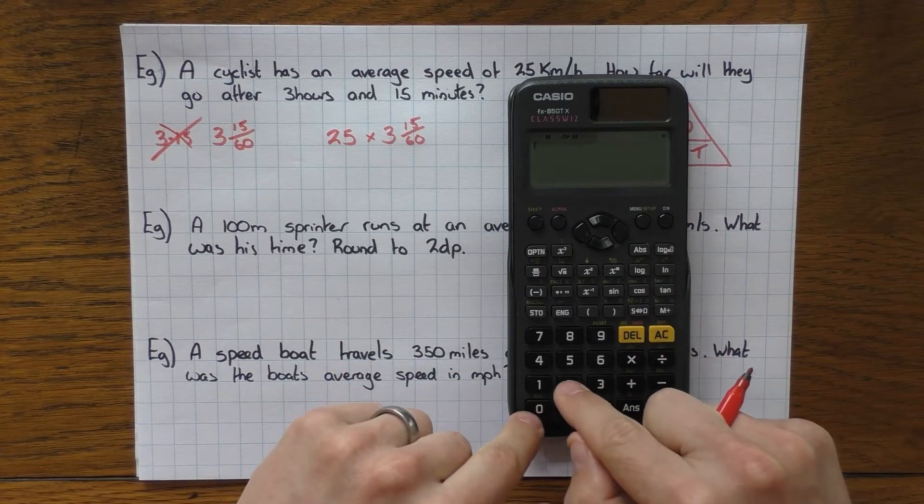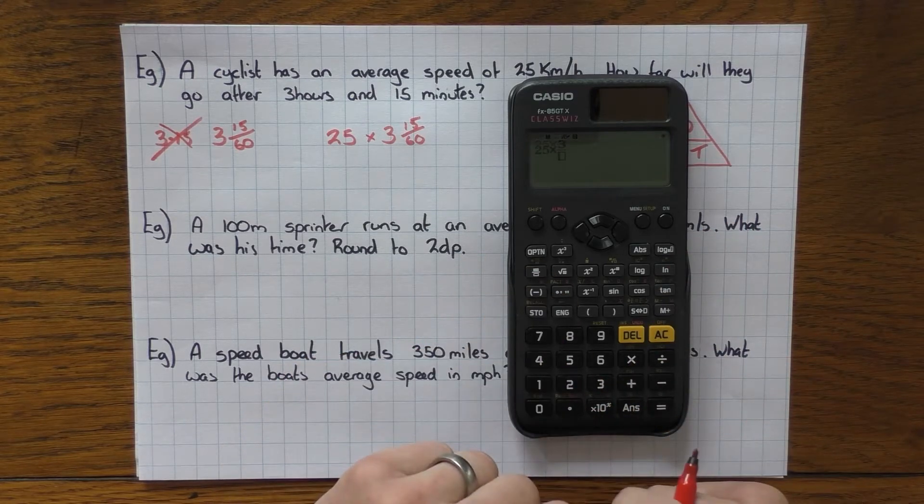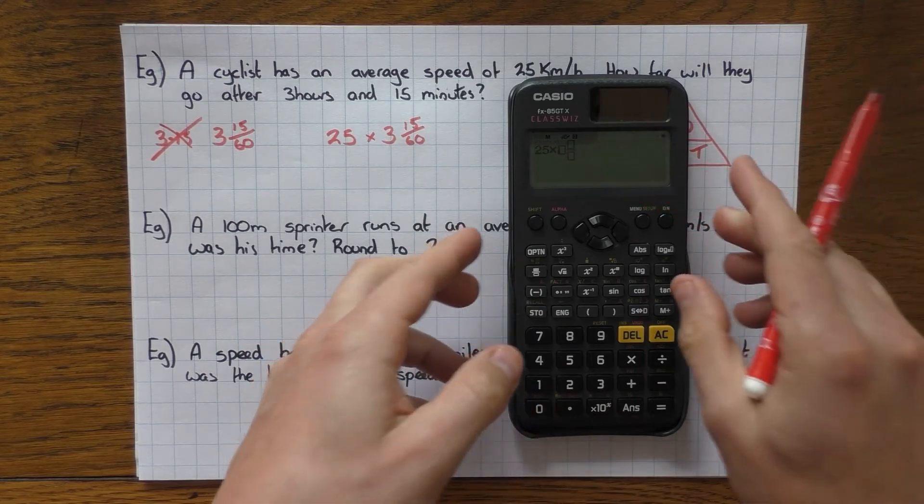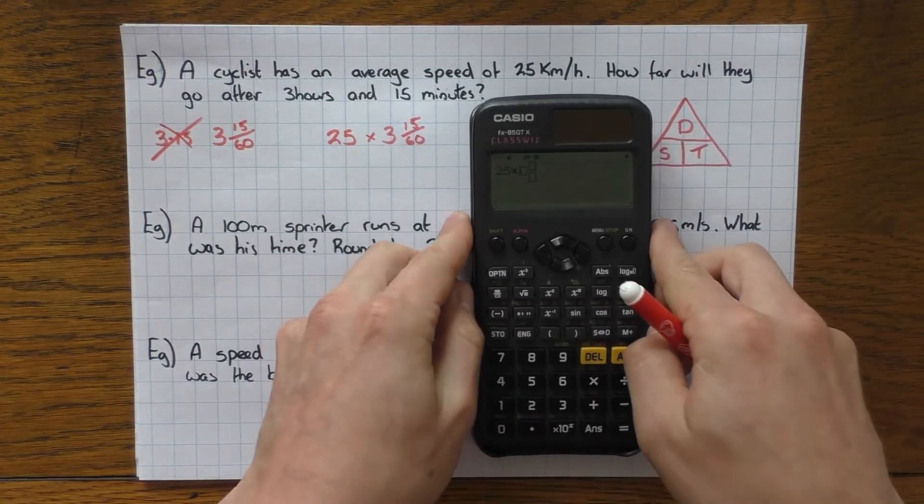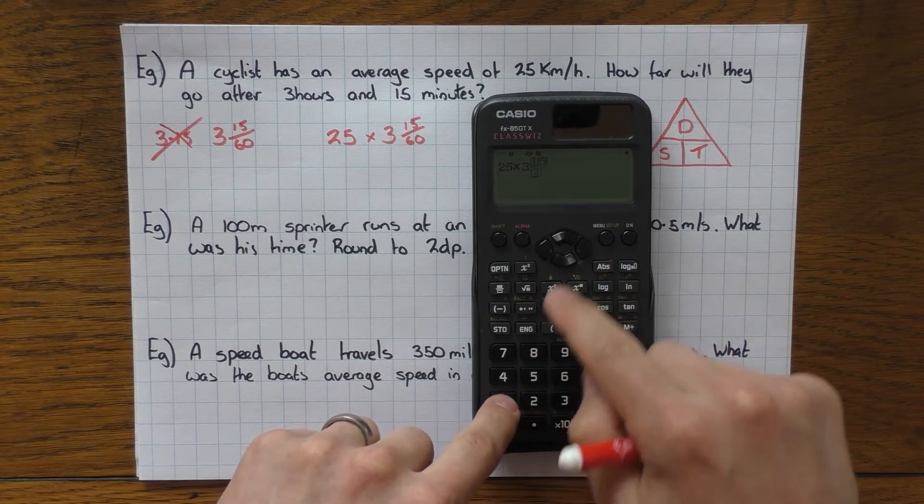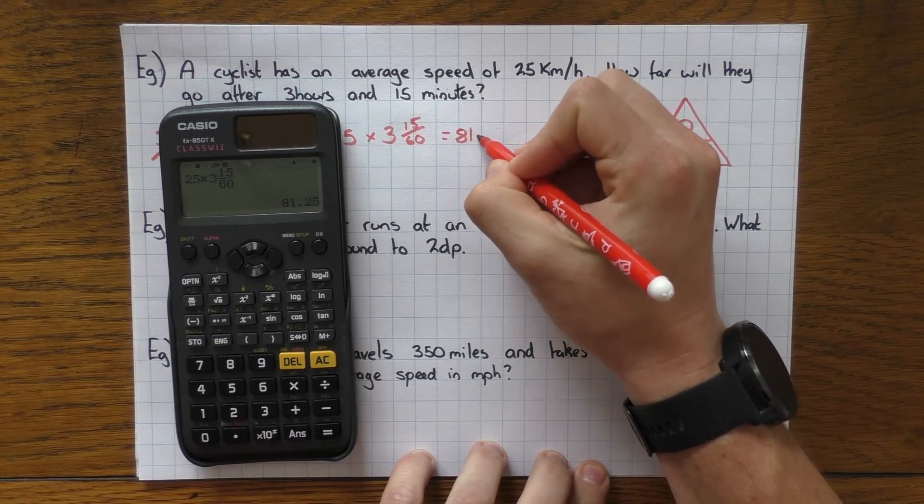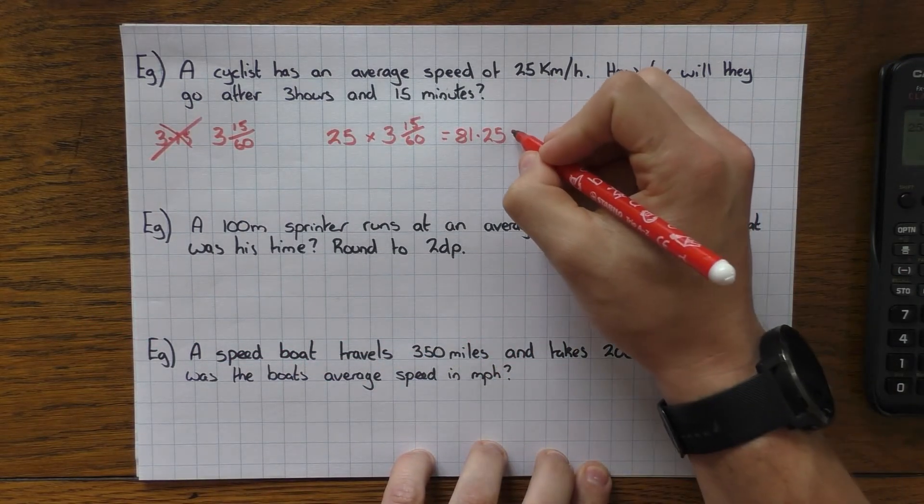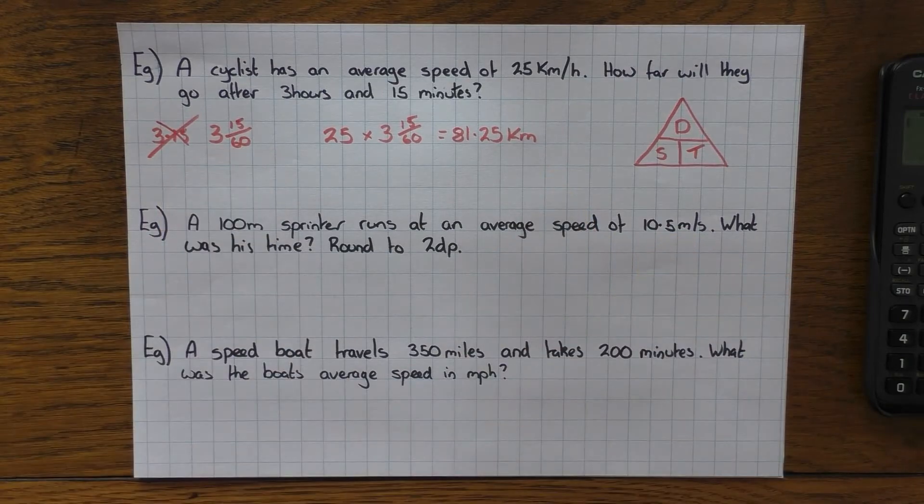And this is how you do it in the calculator. 25, not a problem. Times. Now, whatever you do, do not do 3 and then press the fraction button. It will not work. If you press shift and the fraction button, you should hopefully see, I'll just bring it a little bit closer to the camera. You should see it gives you the option to put a mixed fraction in. So definitely press that. And then obviously fill it in. Not 13. That's a bit keen. And then 15 over 60. Obviously it'll give it in some sort of fraction. Just press the SD. 81.25. And what was the distance in? That was in kilometers. So that would be kilometers. So hopefully that just addresses that misconception there and gives you an easy way out if you can't spot it.